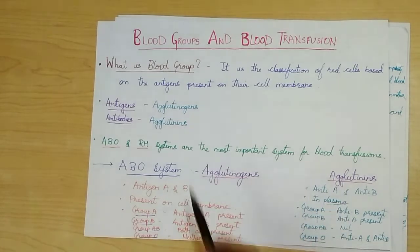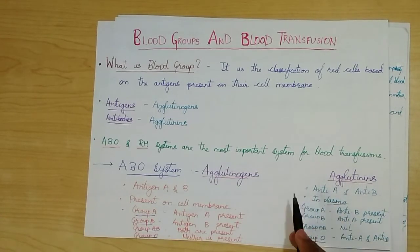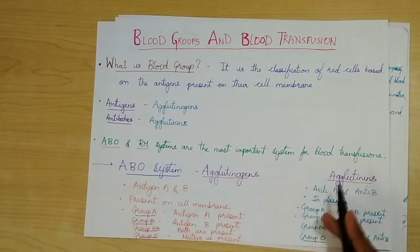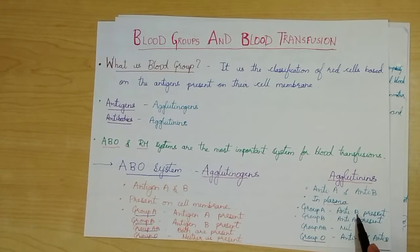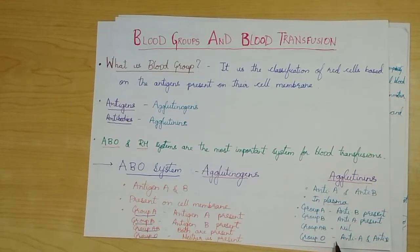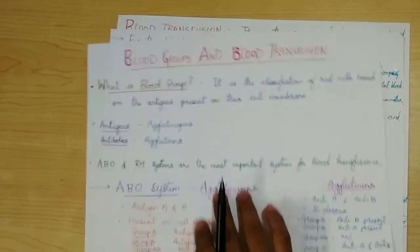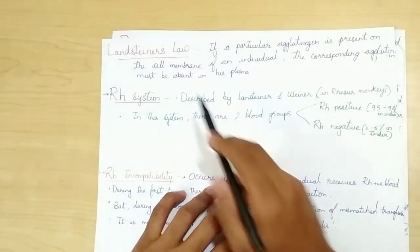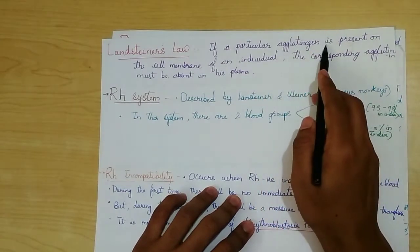For agglutinins, antibody A and antibody B are present in the plasma. As mentioned, the corresponding antibodies will be absent in the plasma, so the other antibody will be present. In group A, anti-B is present rather than anti-A. In group B, anti-A is present. In group AB, none of the antibodies are present. And in group O, both antibody A and antibody B are present.